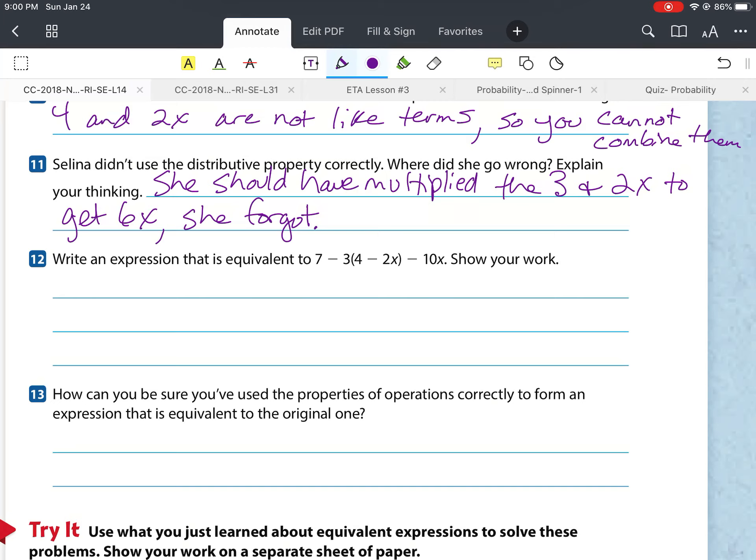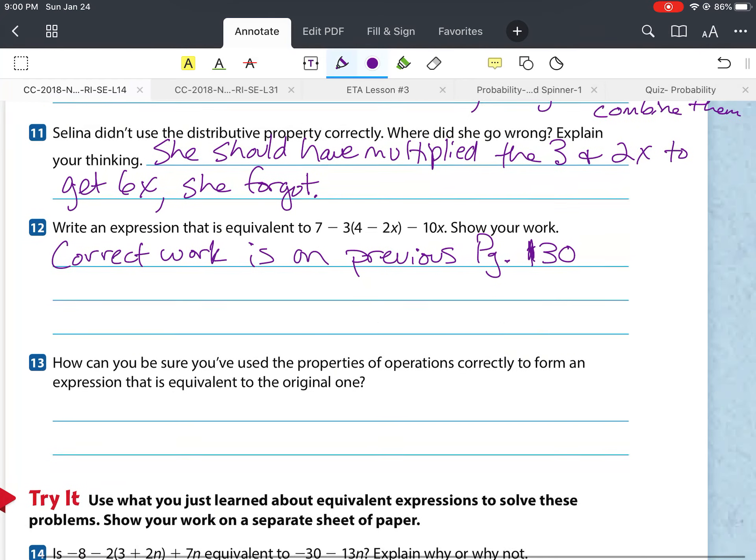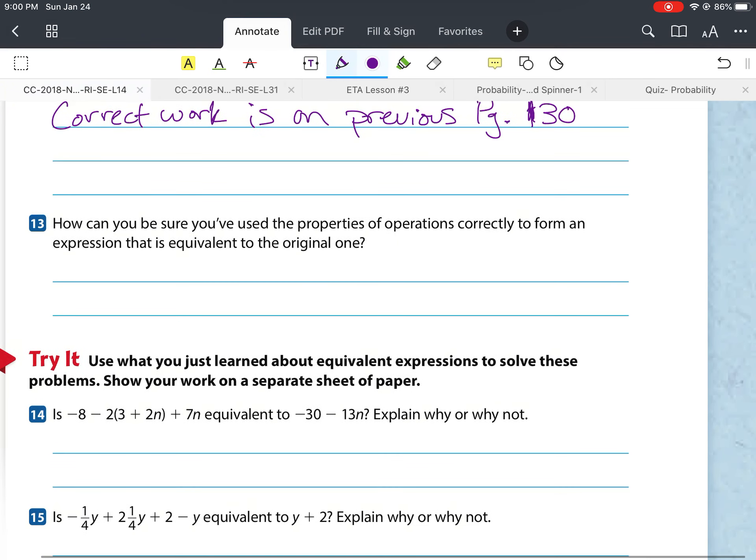Okay. Number 12. It says, Write an expression that is equivalent to 7 minus 3 times 4 minus 2x minus 10x. Show your work. I'm just going to say for this one, correct work is on previous page 130. Okay. Because we've already worked that one.